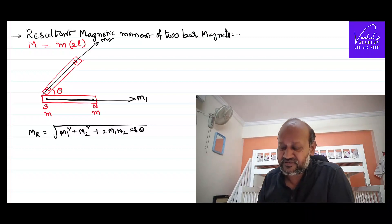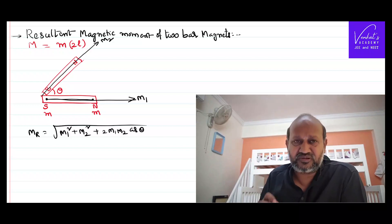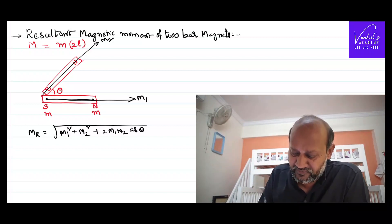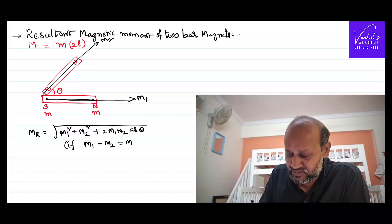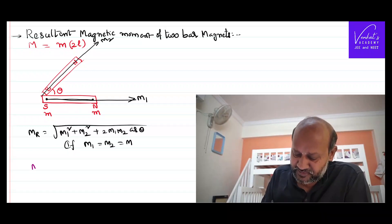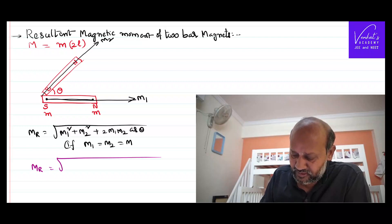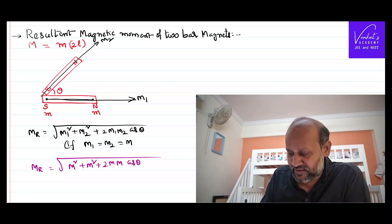This is the answer for this problem. Now if somebody wants to extend this question: what if the two bar magnets are identical, that is m1 equal to m2 equal to m? Then m resultant will be root of m squared plus m squared plus 2·m·m·cos(theta).